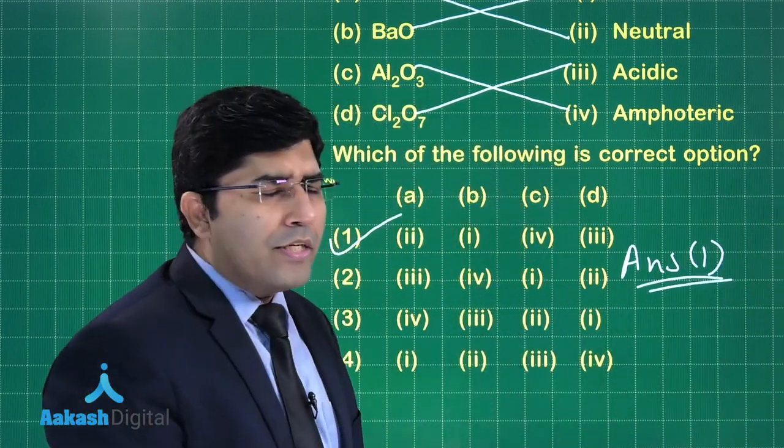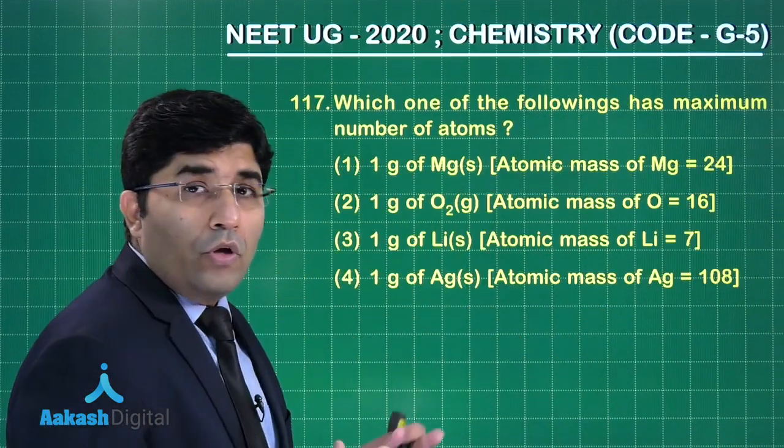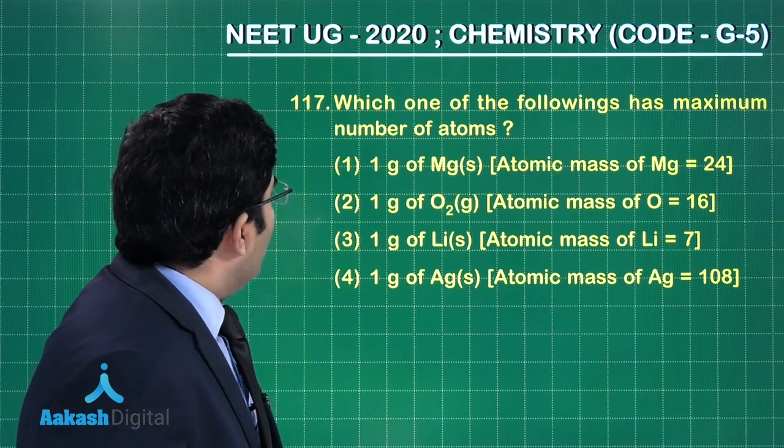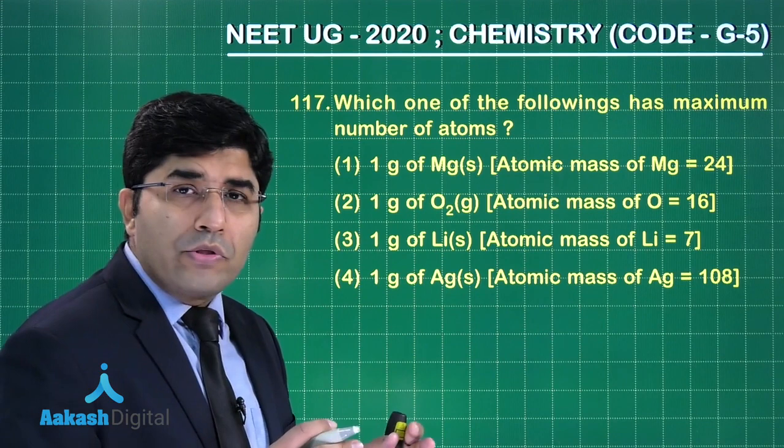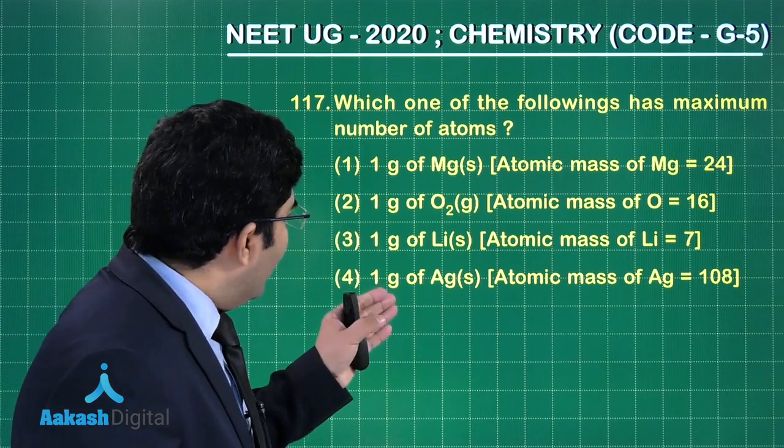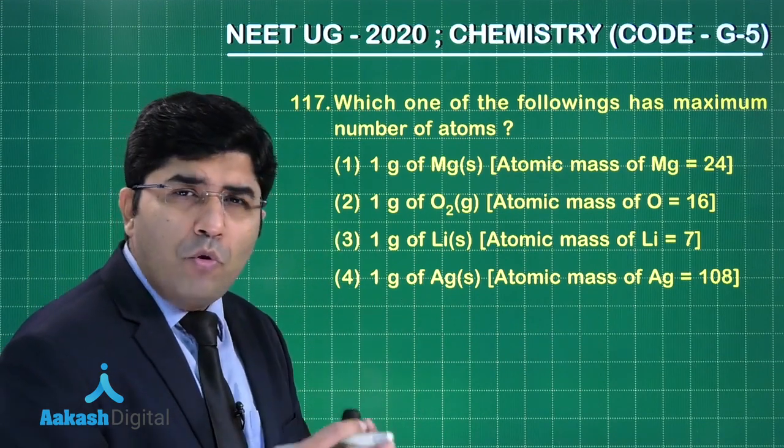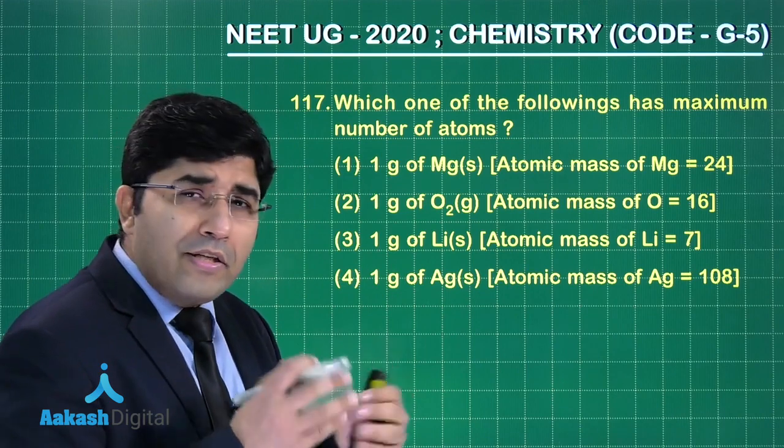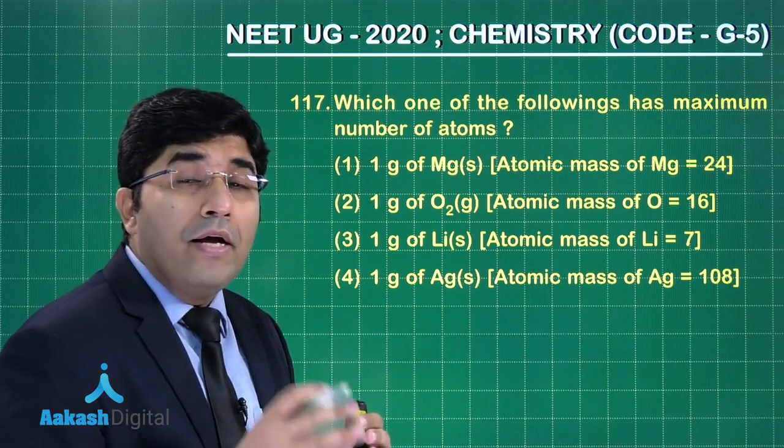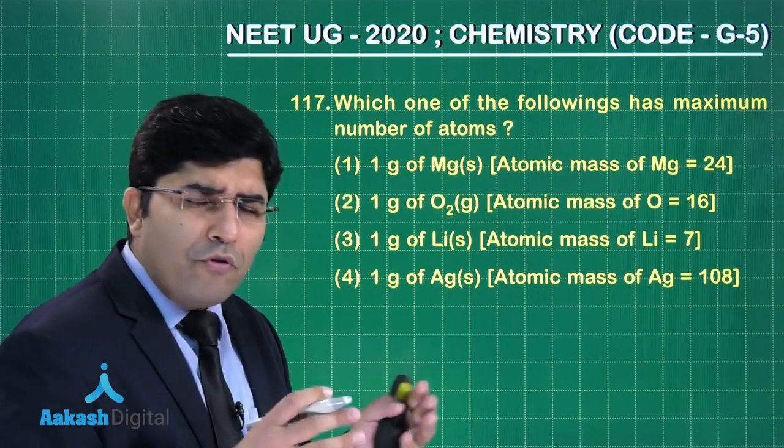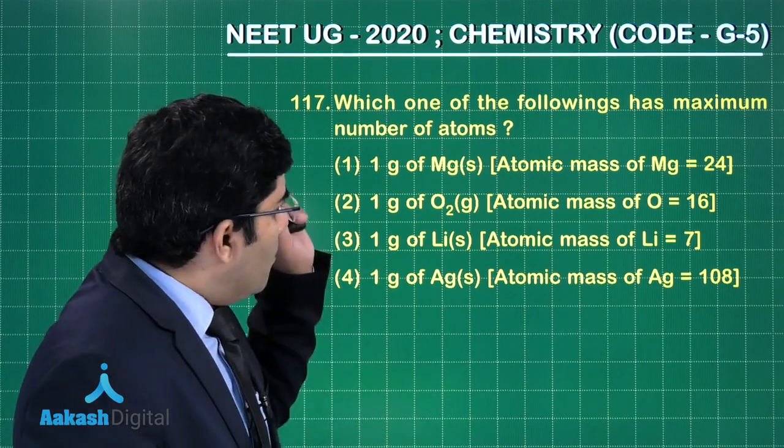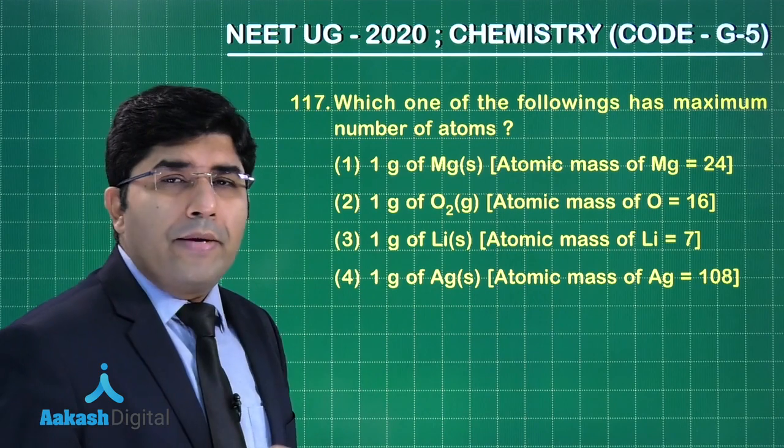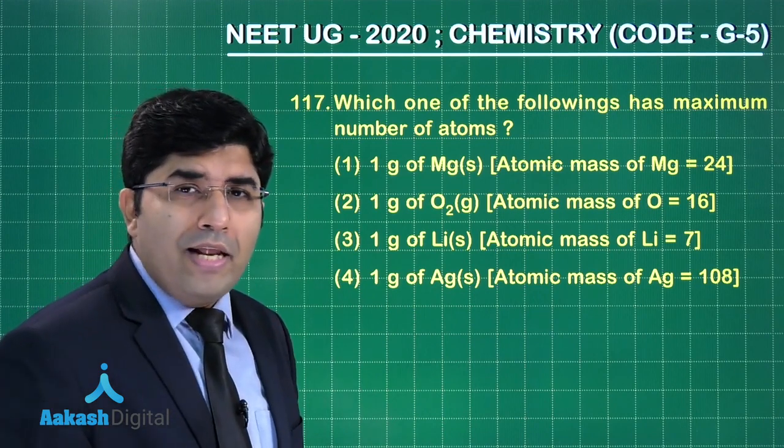Let's move on to the next question. Now in this question is asking which of the following has the maximum number of atoms. So all are the elements. If you find the number of moles, higher is the number of moles, higher will be the number of atoms. So we have to find out the number of moles of atoms and this belongs to the mole concept, that is the first chapter of the class 11th, that is some basic concept of chemistry.